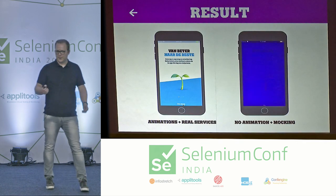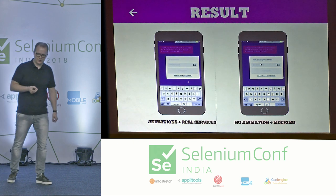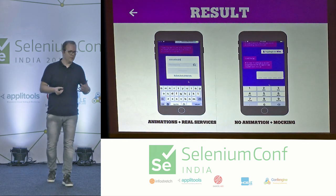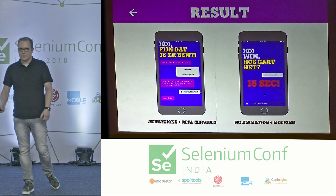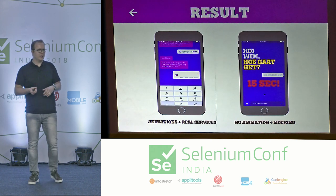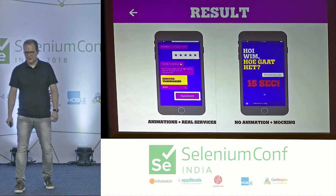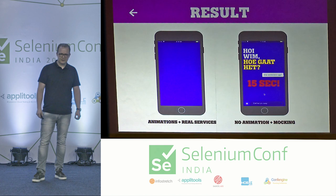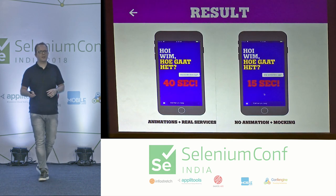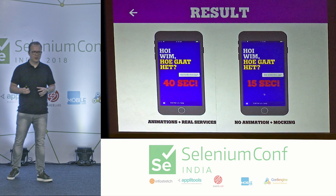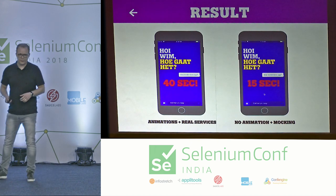The result: on the right side you see the app without animations and with mocking on. On the left side you see the dev or release build with animations and real services. We're done in 15 seconds on the right side, while the left side is still running and takes around 40 seconds. So we have a gain of 25 seconds per scenario — quite a nice result.